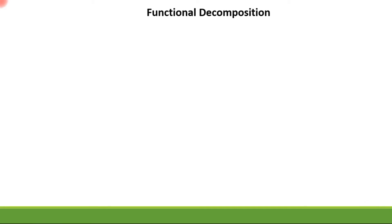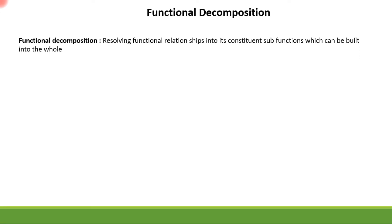Let's understand the concept of functional decomposition with an example, which is very important for the design of complex objects. Functional decomposition is the resolving of functional relationships into their constituent sub-functions, which can then be built together into the whole product.